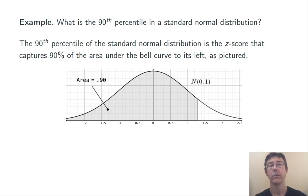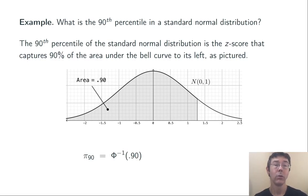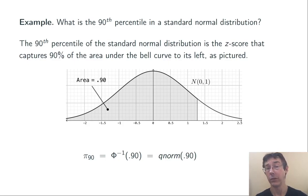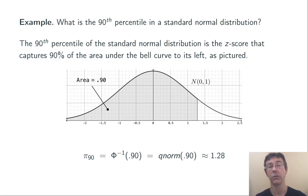In other words, a result that's going to be greater than 90% of the results we'll get if we keep drawing from this distribution repeatedly. So what we need to do is compute qnorm(0.90), which gives phi inverse of 0.90, about 1.28. This is the 90th percentile in the standard normal distribution.